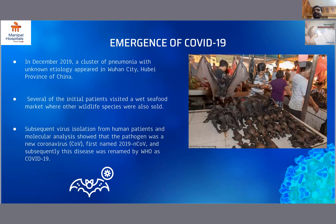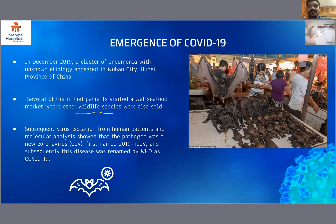Coming to the emergence of COVID-19: in December 2019, a cluster of pneumonia with unknown etiology appeared in Wuhan city, Hubei province of China. Several of the initial patients had visited the wet seafood market where other wildlife species were also sold. The subsequent virus isolation from human patients and molecular analysis showed that the pathogen was a new coronavirus, first named as 2019 novel coronavirus, and subsequently this disease was named by WHO as COVID-19.